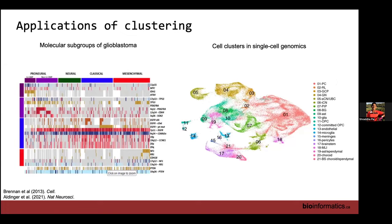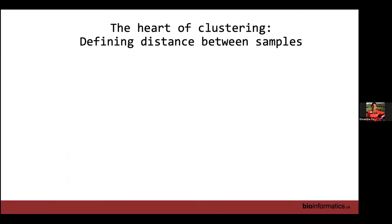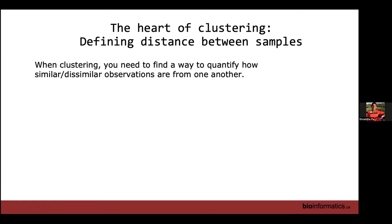Applications of clustering in biomedical research: taking patient data for disease omics and asking how many subgroups we have. For example, aggressive brain cancer glioblastoma and how they first discovered multiple subtypes. You might do single-cell genomics where you've taken your tissue of interest and ask what are all the cellular populations in here — identifying the immune population you want to study. The heart of clustering is finding the distance between two samples: you need a way to quantify how similar or dissimilar two samples are, so you can put similar ones together and call them a cluster. That quantity is your distance metric.